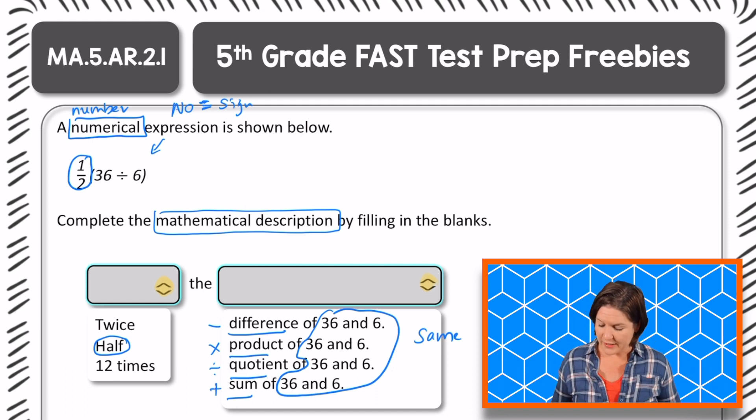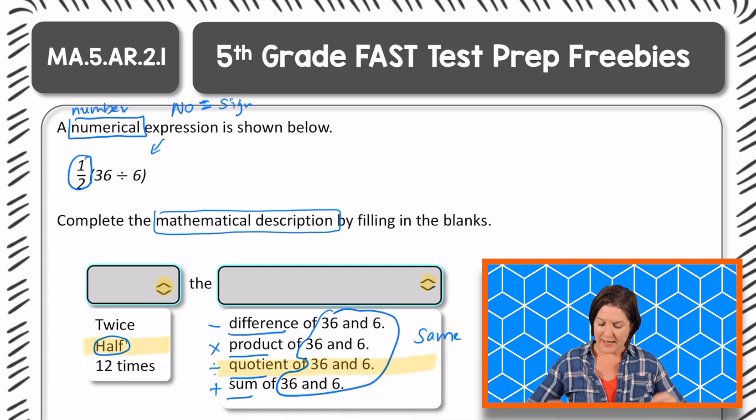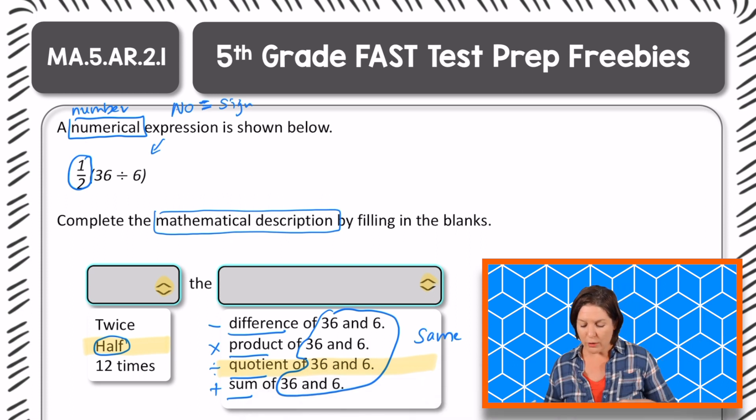Okay, so now that we know that, are we subtracting, multiplying, dividing, or adding 36 and six in our numerical expression? We are dividing, so we need to select the one that says the quotient of 36 and six. I'm going to go ahead and highlight the answer that I would select and highlight the answer that I would select right there.